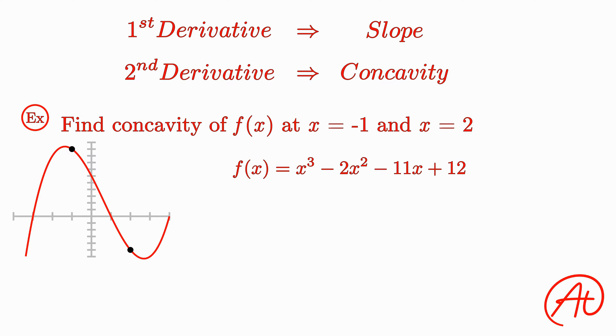And using what we just learned, we can pretty easily figure out what we expect to find. Because the graph is concave down, like the frowny face, at the first point, we expect the concavity to be negative at this point. And since the graph is concave up at the second point, we expect the concavity to be positive at this point.